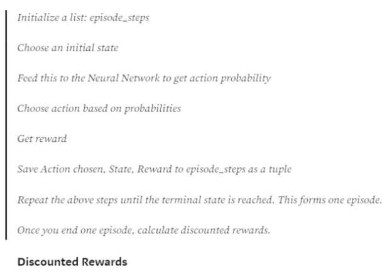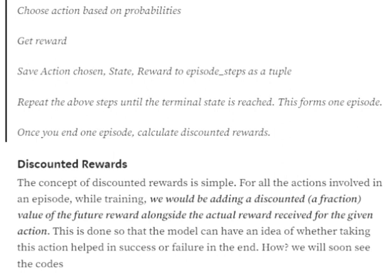We repeat this process — taking a state, feeding it to the neural network, getting action probabilities, choosing an action, receiving a reward, and moving to the next state — until the terminal state is reached. Once the episode ends, meaning we've either failed or succeeded, that forms one complete episode.